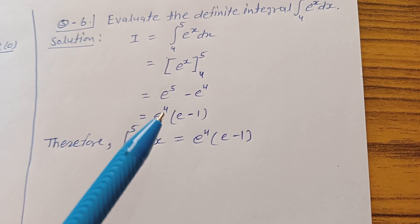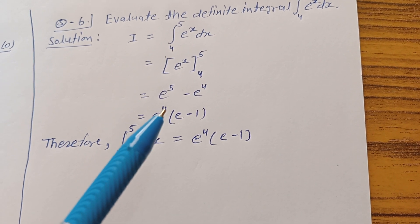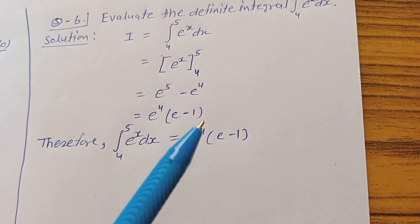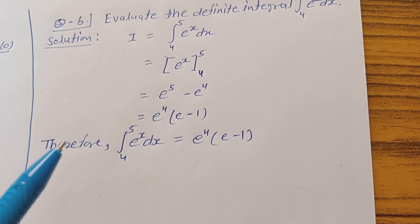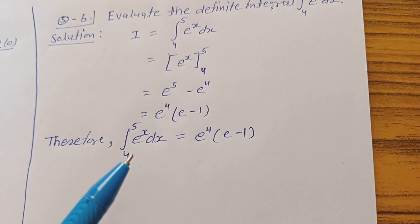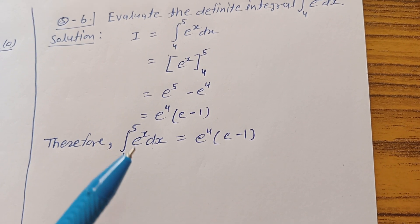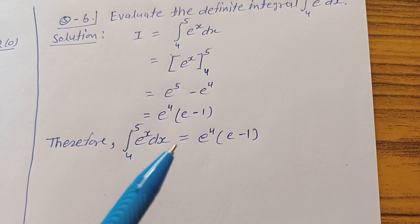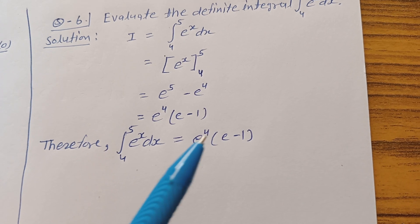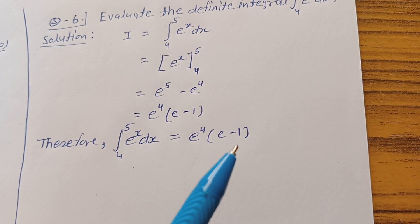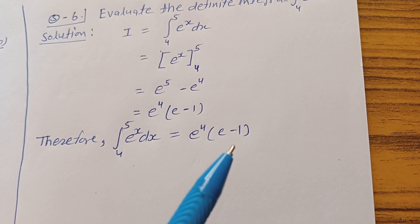In these two terms, take e power of 4 common, so I is equal to e power of 4 bracket e minus 1. Therefore, integration from limit 4 to 5 of e power of x dx is equal to e power of 4 times bracket e minus 1. That is the solution.